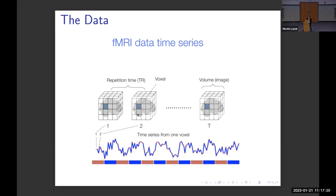The data are collected as a sequence of images over time — at each time point we have an image of the whole brain. Because of the way the radio frequency pulses are applied, the data come out as a three-dimensional volume — a big cube split up into smaller cubes called voxels. You can think of voxels as the three-dimensional analog of a pixel — a volume element instead of a picture element. These voxels are quite small, typically three millimeters by three millimeters by three millimeters, and within the human brain there are hundreds of thousands of them.